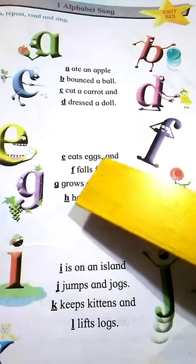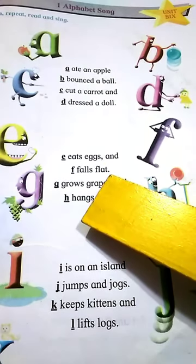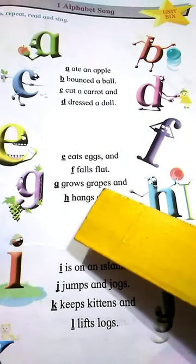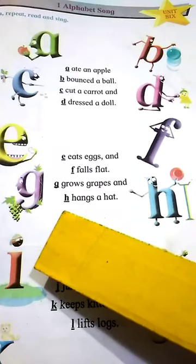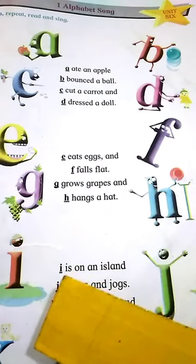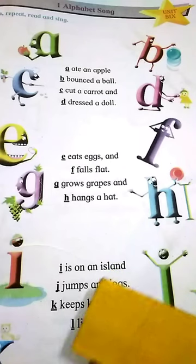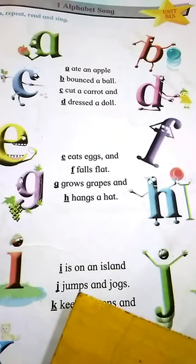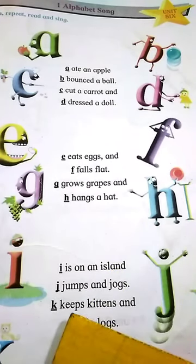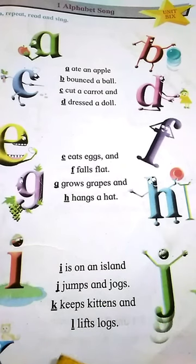E eats and F falls flat. G grows grapes and H hangs a hat. I is on an island. J jumps and jogs. K keeps kittens.